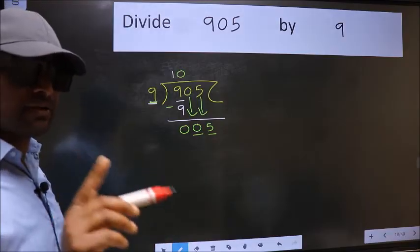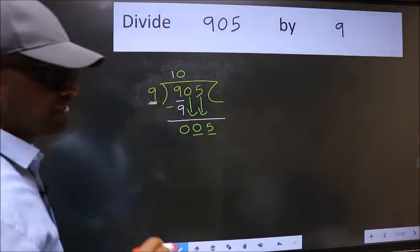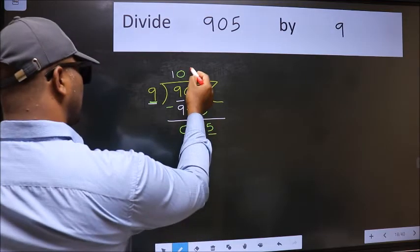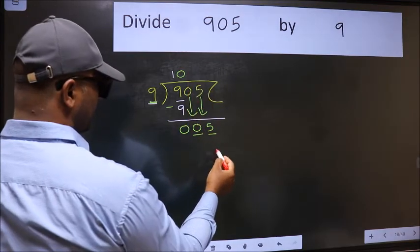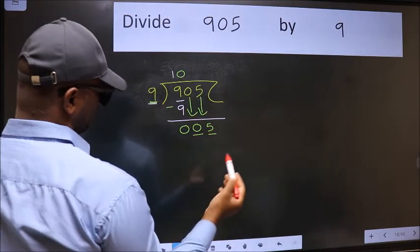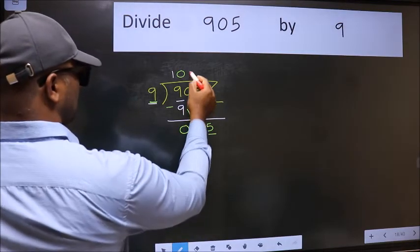Instead of that, what you should think of doing is: which number should we take here? If I take 1, we will get 9, but 9 is larger than 5. So what we should do is, we should take 0. So 9 into 0 is 0.